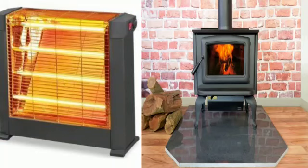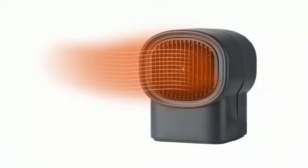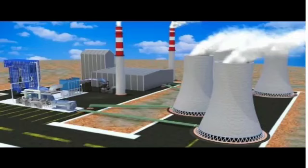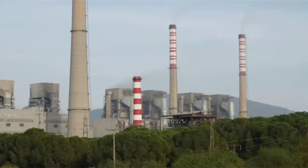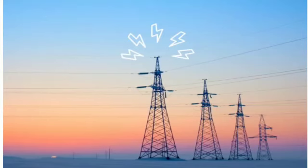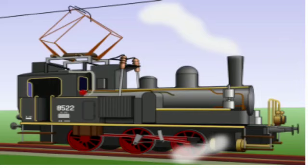ایک اور مثال یہ ہے کہ سردیوں میں ہم heater use کرتے ہیں، heat کی وجہ سے آپ سردی سے بچ سکتے ہیں اور خود کو گرم رکھ سکتے ہیں۔ اسی طرح factories میں بھی heat کی ضرورت پڑتی ہے۔ Another example is the use of heat in the power station to produce electricity - power stations میں بجلی پیدا کرنے کے لئے بھی heat کا استعمال کیا جاتا ہے۔ اور steam engine کو چلانے کے لئے بھی heat کی ضرورت ہوتی ہے۔ So these are some common examples of uses of heat۔